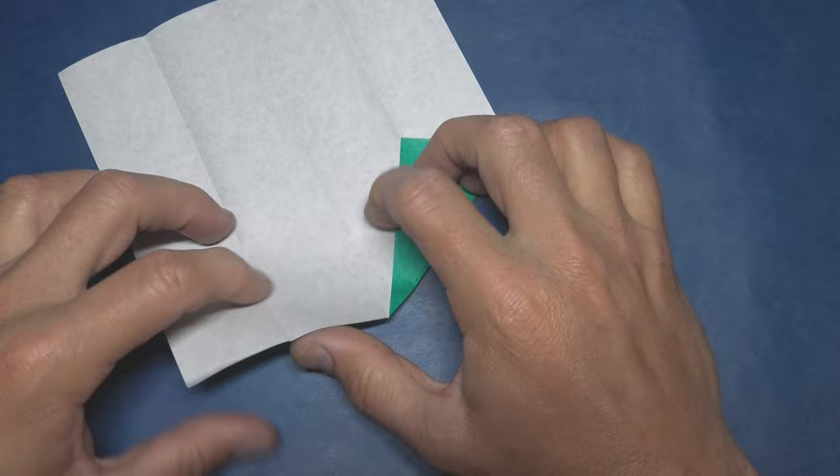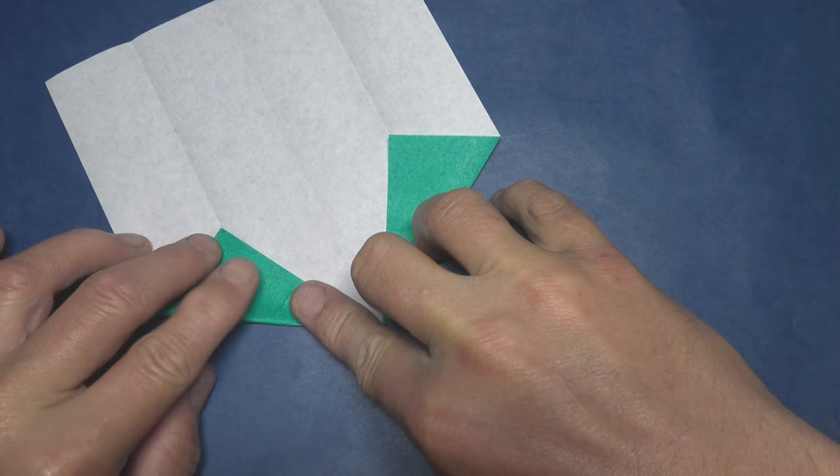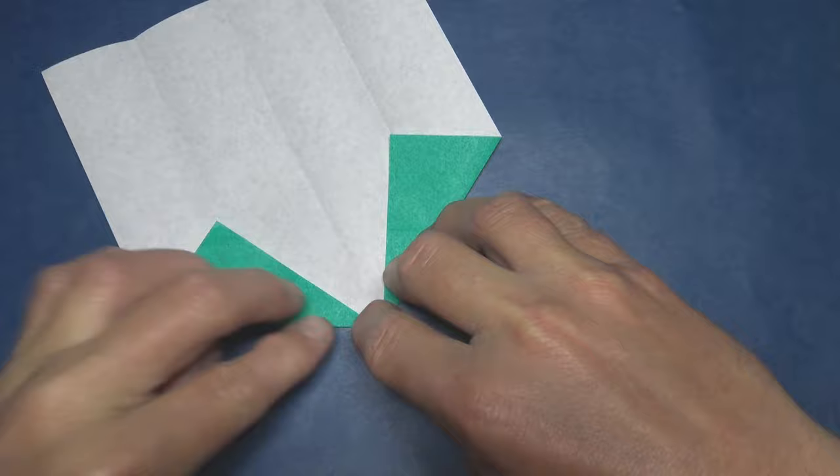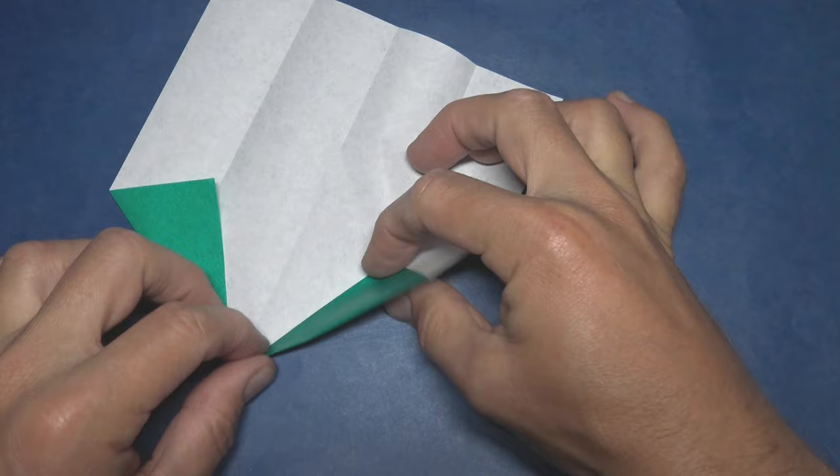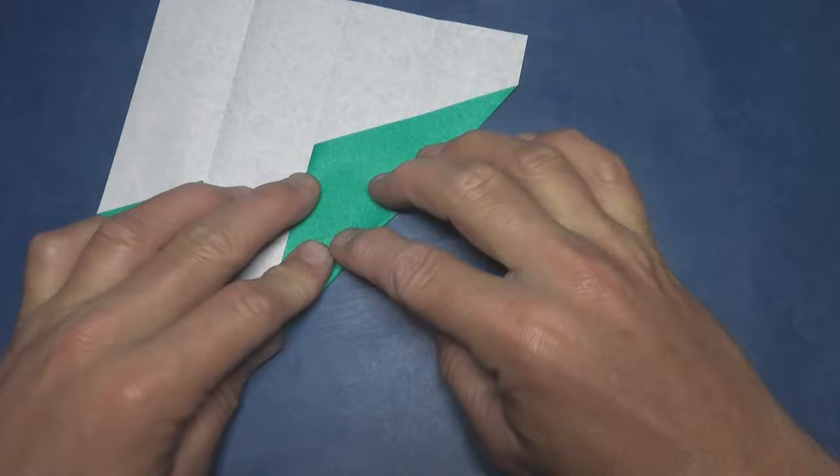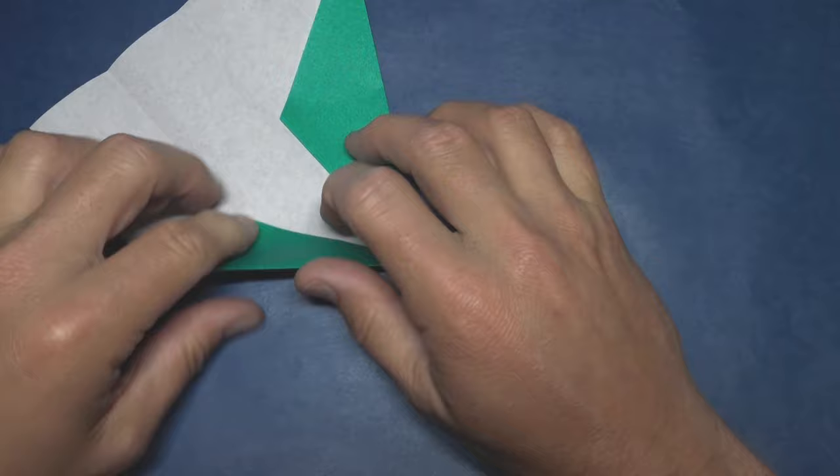And unfold and repeat. Crease sharply and fold this flap up so that this edge aligns with the crease. And repeat.